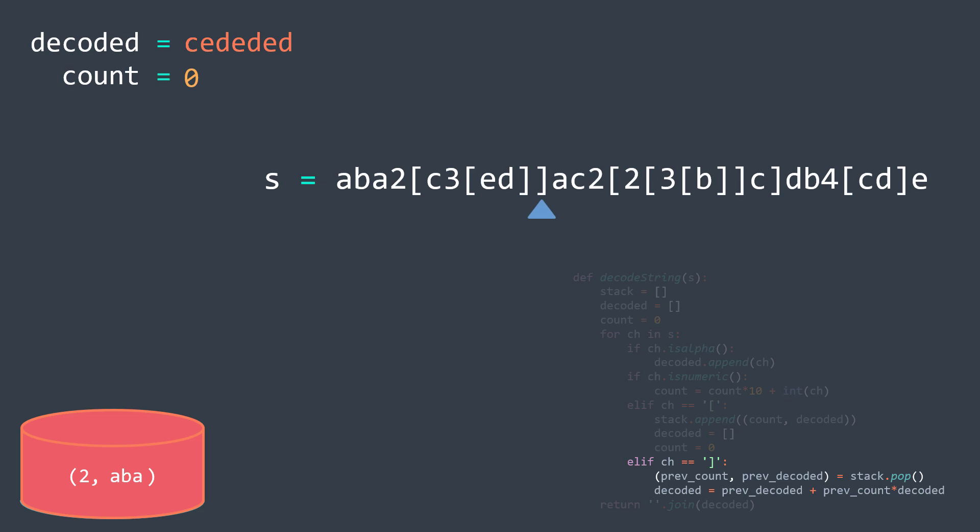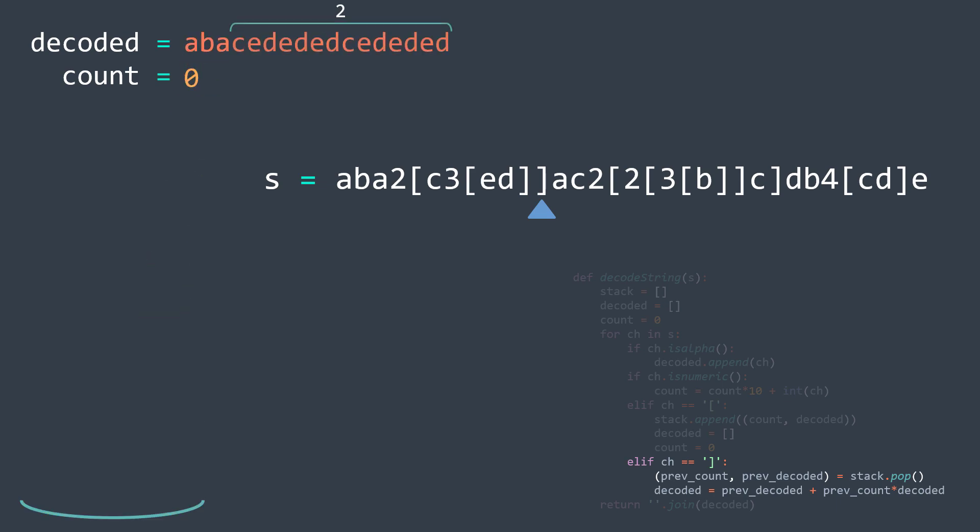Next character is also a closing bracket. Previous count is 2, previous decoded is aba, and actual decoded is cededed — so decoded becomes aba plus 2 times cededed. What we did here is that once we finished decoding c3[ed], we go back to the previous level, take the stored data, and multiply the decoded expression by the stored integer. We'll let the animation continue.